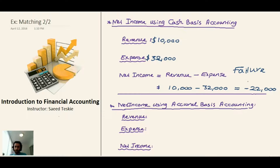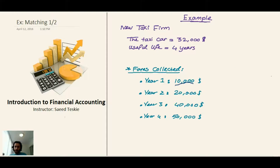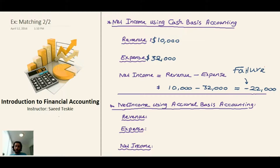So during the first year, based on cash basis accounting, we have a loss of $22,000. You could say this business has failed, because it has a negative net income — it didn't generate income. Now let's see what the net income is if we use accrual basis accounting for the first year.